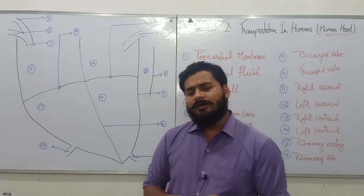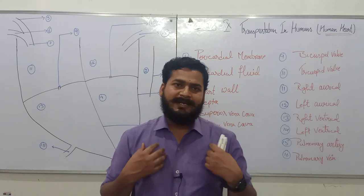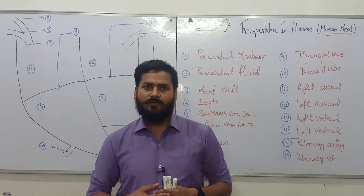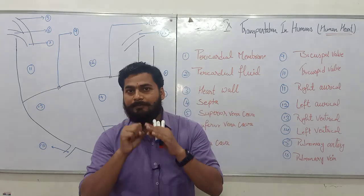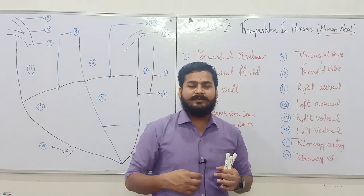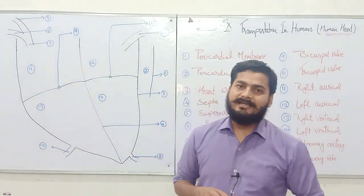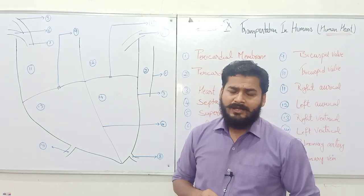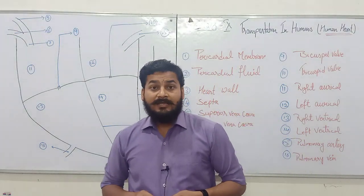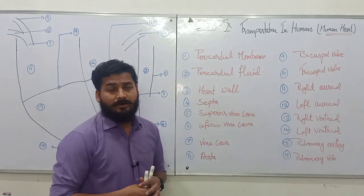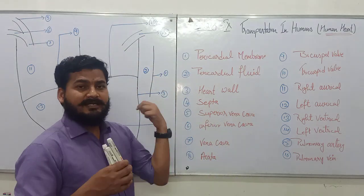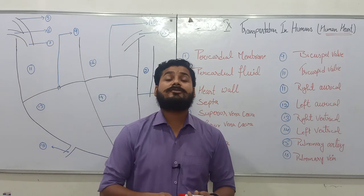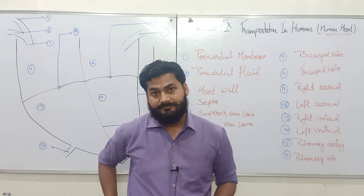We talked about the digestive system in our last classes. We saw that food was being digested in the system, absorbed in the small intestine through villi, and that got absorbed into the blood. Now that blood flows throughout the body and supplies the materials to the site wherever it is required. This overall transportation or movement of blood is controlled by an organ in our body.